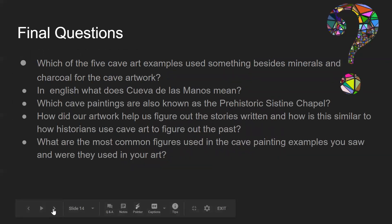Finally, there are some questions to consider before we meet again. First: which of the five cave art examples uses something besides minerals and charcoal for the artwork? Second: in English, what does 'Cueva de las Manos' mean? Third: which cave paintings are also known as the Prehistoric Sistine Chapel? Fourth: how did your artwork help convey the stories written, and how is it similar to how historians use cave art to figure out the past? And finally: what are the most common figures used in the cave painting examples you saw, and were some of those used in your art?